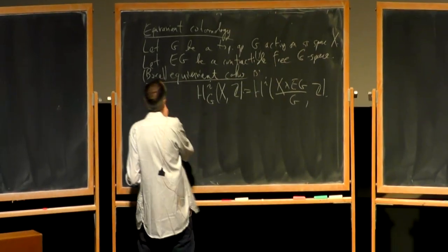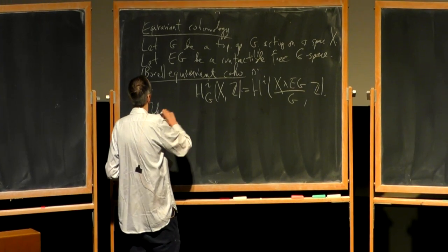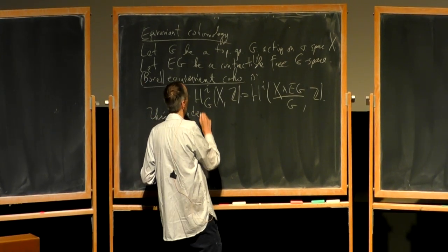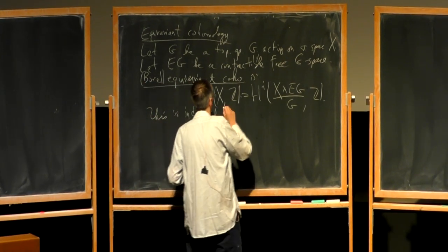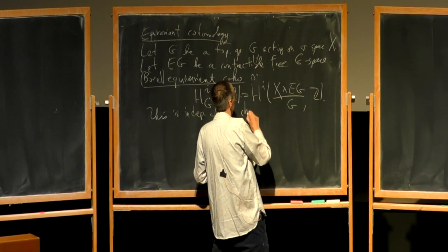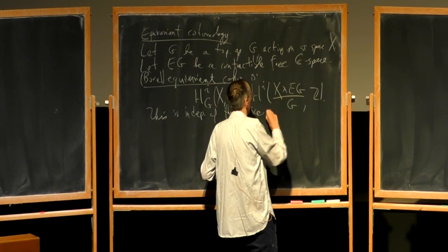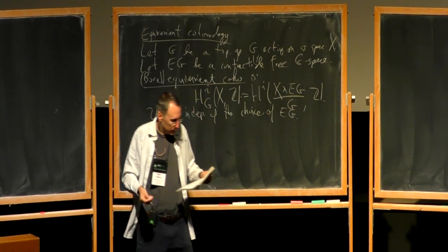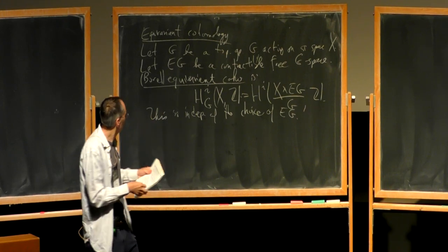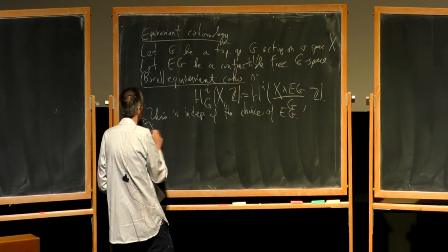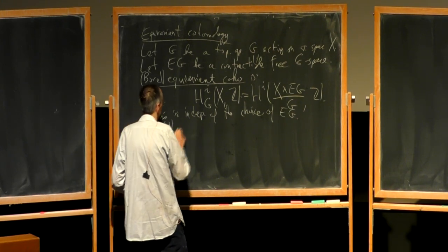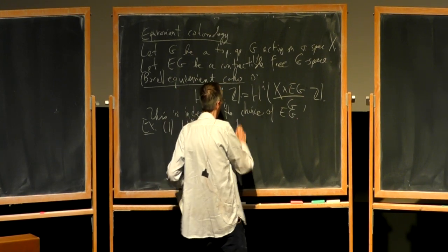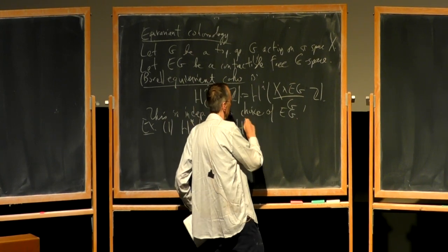The basic thing to say is that this is independent of the choice of EG. Some quick examples: number one, the equivariant cohomology of a point is just what I called earlier the cohomology of BG. That's obvious because BG, the classifying space, was defined as EG mod G, which is what I called the classifying space.